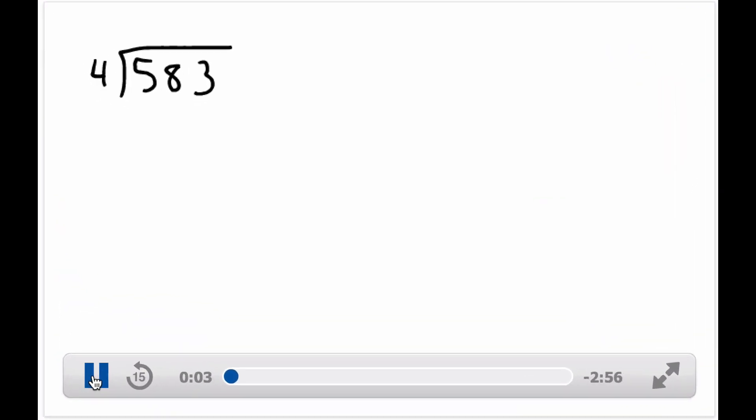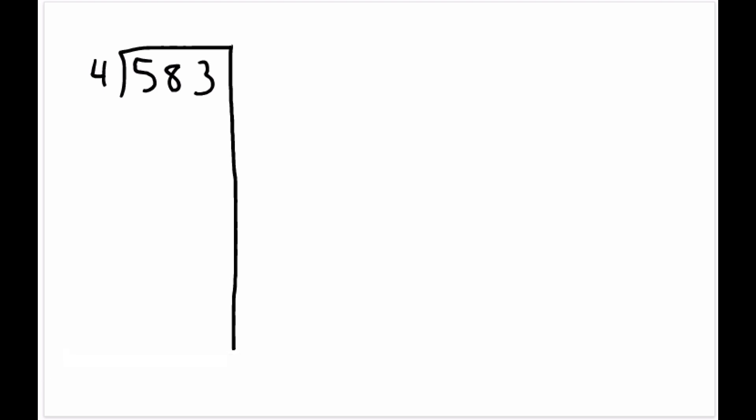All right, for the partial quotients method, the idea is we're going to keep a running tally down the right column of how many times we can subtract 4 from 583.